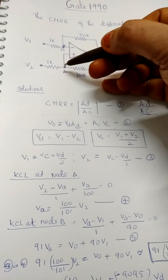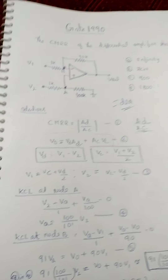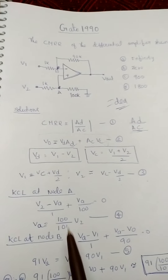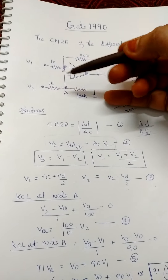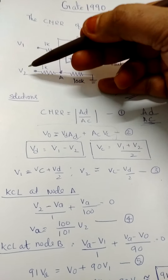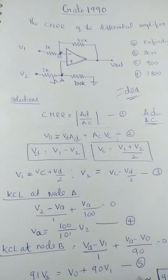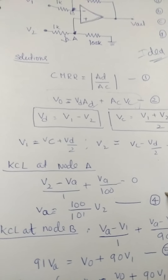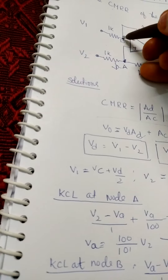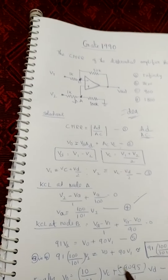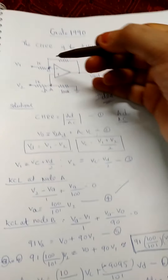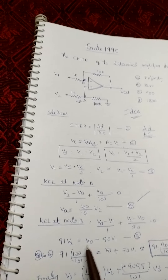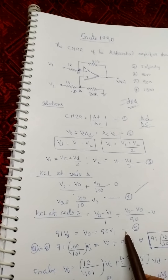Now apply KCL at node A and node B to get the common mode rejection ratio in terms of AD and AC. At node A, the KCL equation is: (V2 − VA)/1 + VA/100 = 0, which gives VA = (101/100) × V2 — this is equation 1. At node B, the KCL equation considering V1 gives: (VA − V1)/1 + (VA − V0)/90 = 0, which simplifies to 91·VA = V0 + 90·V1 — this is equation 2.